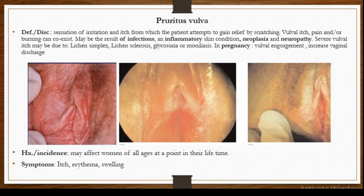We also have itchy vulva from inflammatory skin conditions, and the most common one is irritant contact dermatitis. Others may include psoriasis, seborrhoeic dermatitis, allergic contact dermatitis, and folliculitis. There are a lot of them, but these are the most important ones. We may also have itchy vulva due to neoplasias.